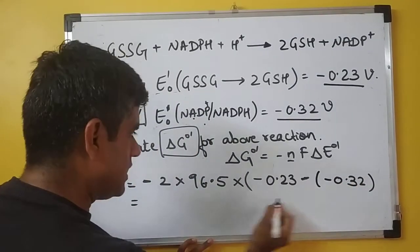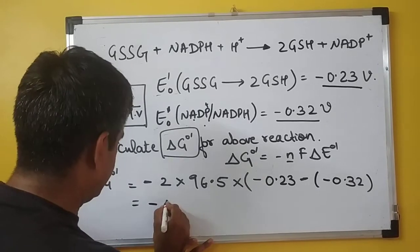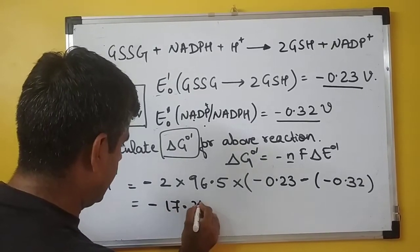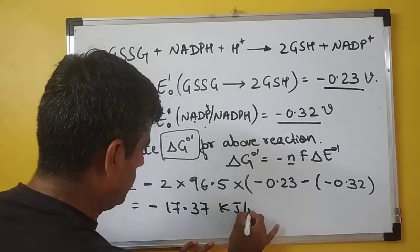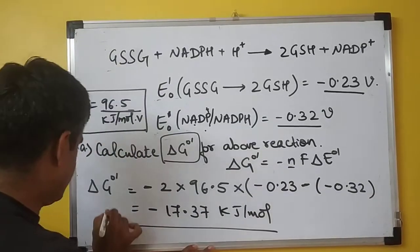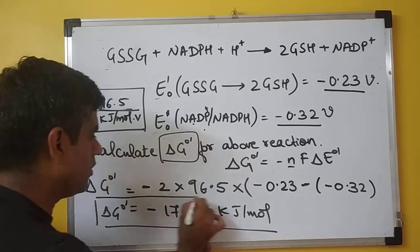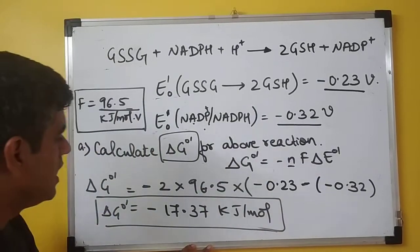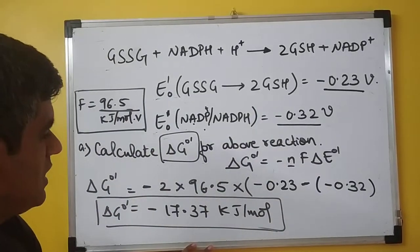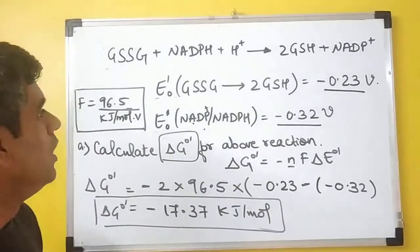Solving this, the positive multiplied by the minus will be negative. So the value we have is 17.37 kilojoules per mole. So the value of ΔG₀' for this reaction would be -17.37 kilojoules per mole.